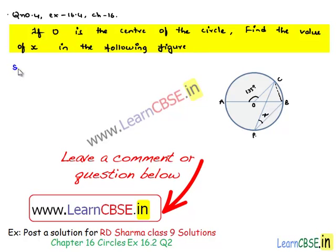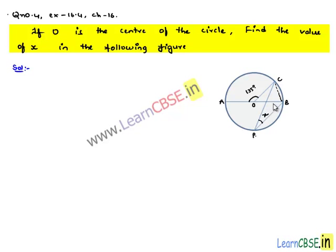Moving on to solution. Here in the figure, a circle is given with center O and AB as diameter and A, P, B, C are points on the circle. It is given that angle AOC is equal to 135 degrees and we need to find the value of x.